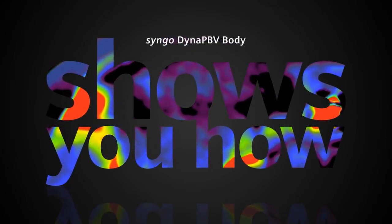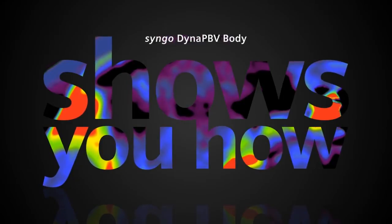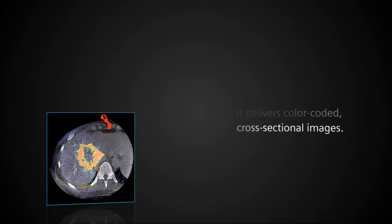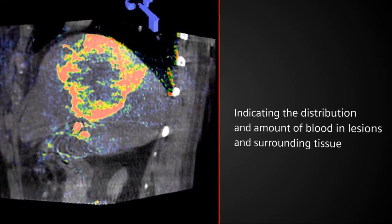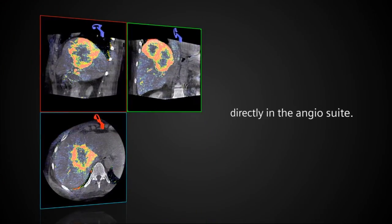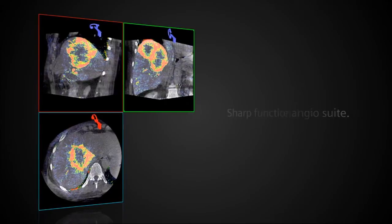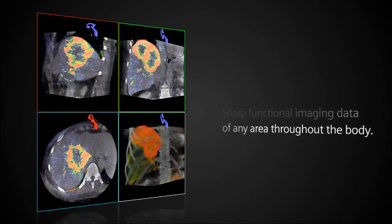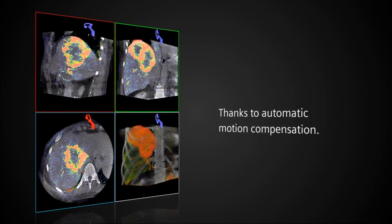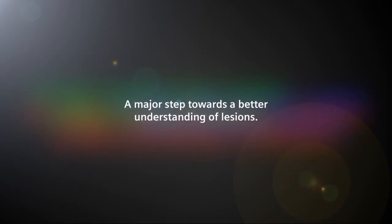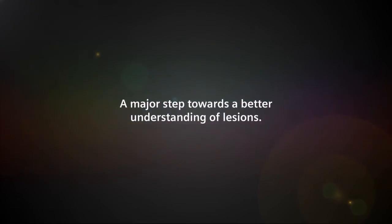It delivers color-coded cross-sectional images indicating the distribution and amount of blood in lesions and surrounding tissue, directly in the angio suite. Sharp functional imaging data of any area throughout the body, thanks to automatic motion compensation.